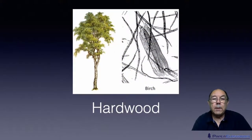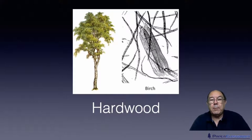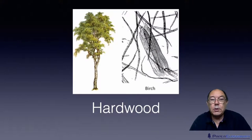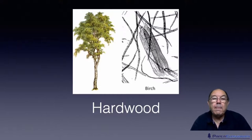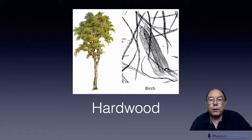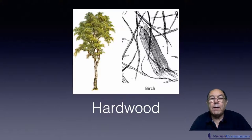Moving on now, this is a hardwood. Hardwood fibres are typically about half the dimensions of a softwood fibre — so typically up to two millimetres long and around 20-22 microns wide rather than 40. The one thing that stands out for all hardwoods compared to softwoods is the presence of these things here that we call vessel cells or vessel elements.